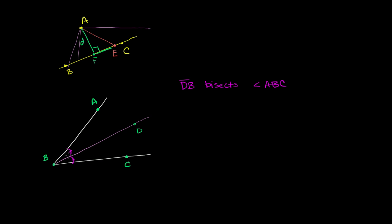So let's take an arbitrary point that sits on this angle bisector — let's take this point right over here and call it E. This is going to be an arbitrary point on our angle bisector.